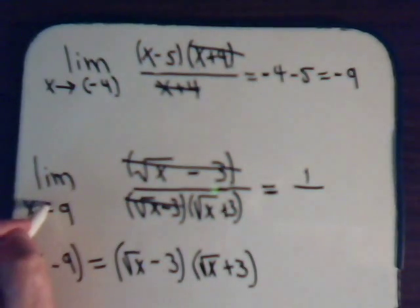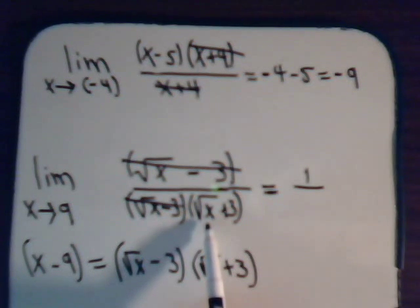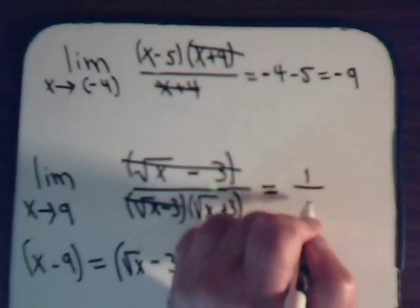And x is supposed to approach 9. So if we put 9 in place of x, the square root of 9 is 3 plus 3 is 6.